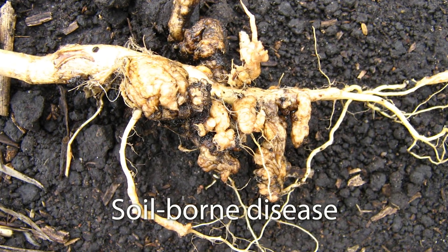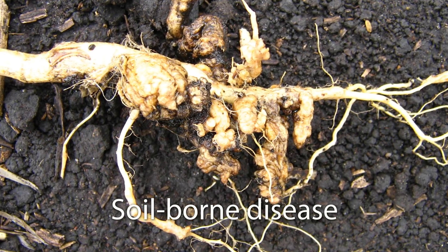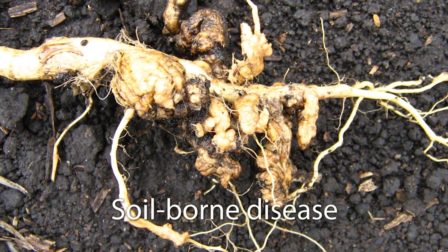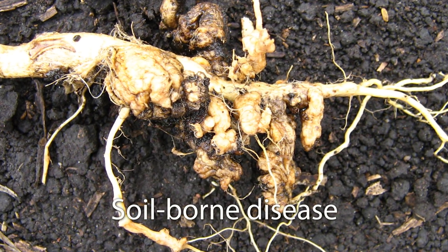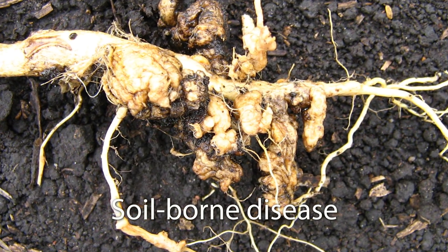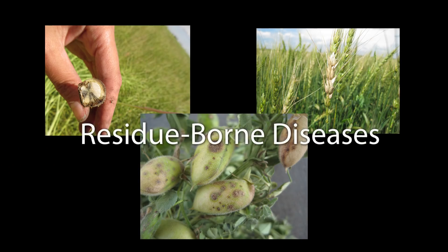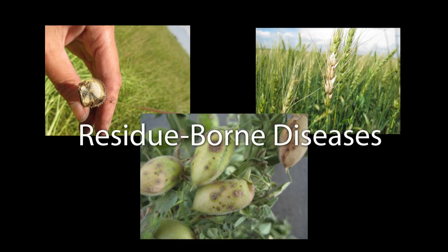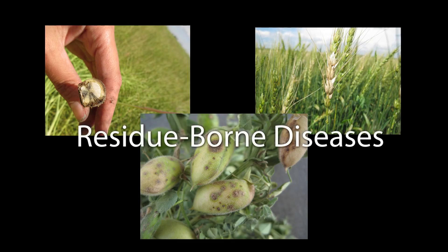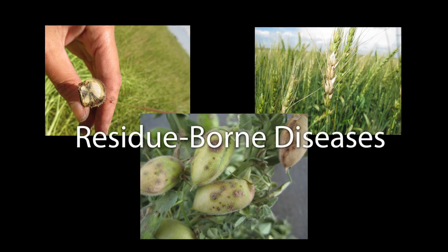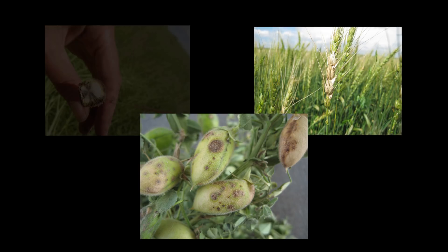Soil-borne pathogens can survive in the soil until a host crop is available. Crop rotation allows time for pathogens to break down. Other pathogens survive on the crop residue, and crop rotation gives the residue time to break down.